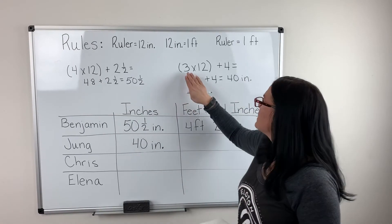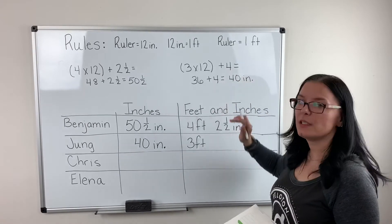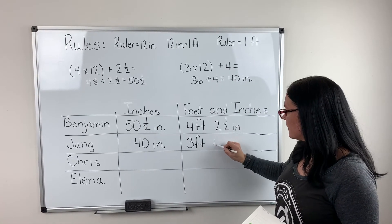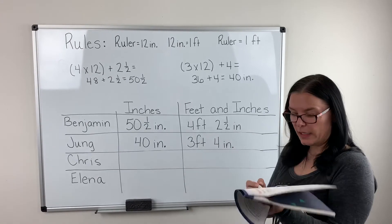She did three rulers, which was three feet, and she did four more inches. So she jumped three feet four inches. What I would like you to do now is try Chris and Elena's.